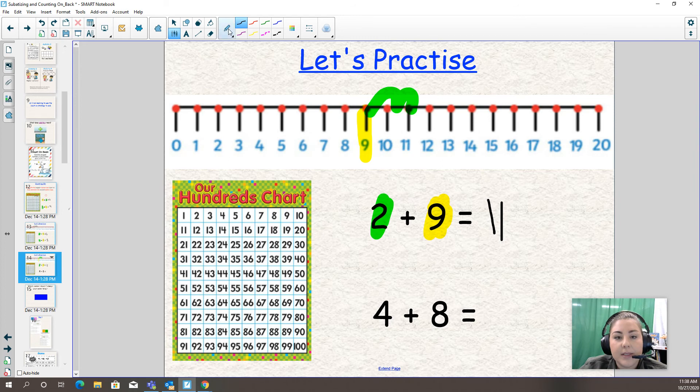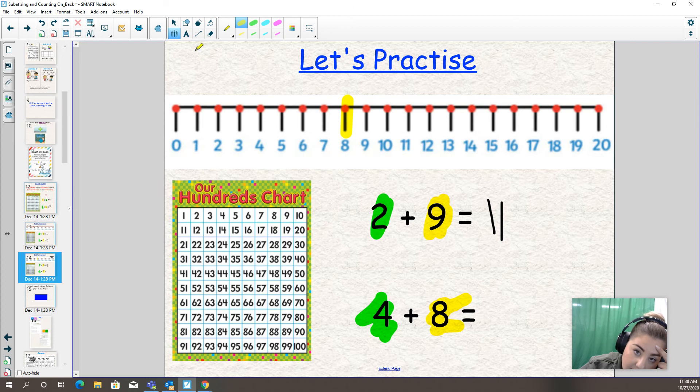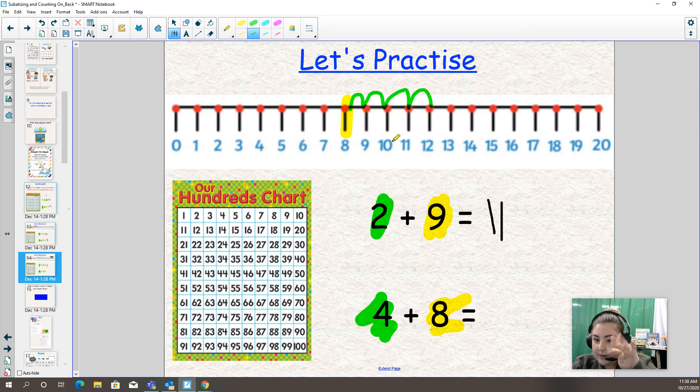Another example: four plus eight. Which one's the bigger number? Eight. You got it. So highlight that in yellow. And which number are we counting on by? Four. I'm going to find eight on the number line. You need eight in your head, eight on the hundreds chart, eight on a number line. So eight, nine, ten, eleven, twelve. I kept track on my fingers. You could keep track of the jumps on your charts too. So eight plus four is twelve.